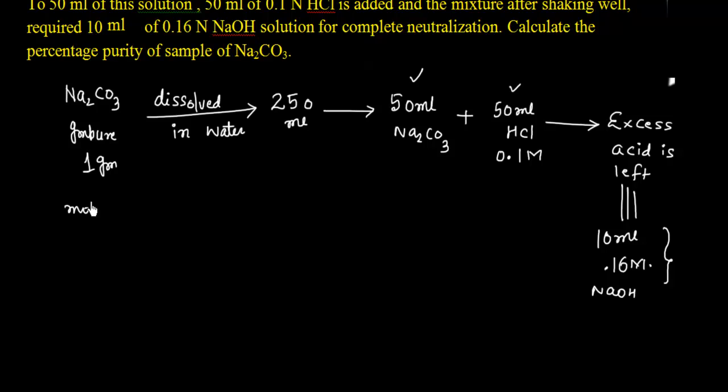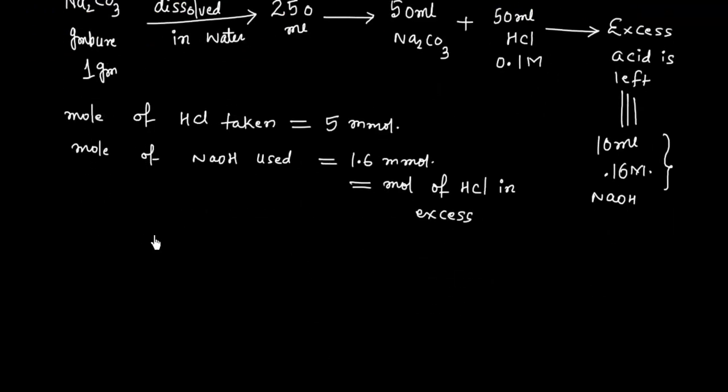So let us say moles of HCl taken. So initially, moles of HCl taken, this is equals to 50 into 0.1, so this is 5 millimole. And moles of HCl that is in excess is the same as moles of NaOH used. So moles of NaOH used, this is equals to 10 into 0.16, so 1.6 millimole. And this is same as moles of HCl in excess. So from here we can calculate moles of HCl reacted. This is 5 minus 1.6, this is equals to 3.4 millimole.